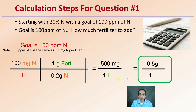Our target is 100 parts per million, we have 20% nitrogen — which is where the 0.2 comes from. Multiply across the top, divide by the bottom, and we get 500 milligrams per liter, or simplified, 0.5 grams per liter.